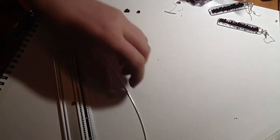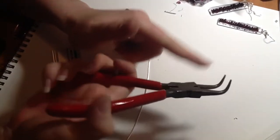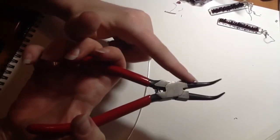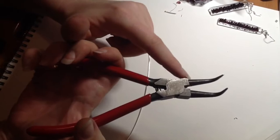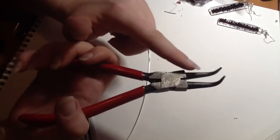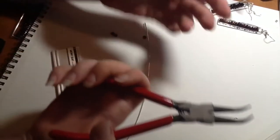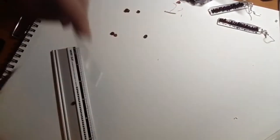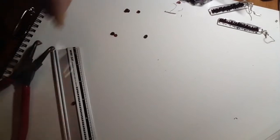Now what we're going to use to make our frame is the flat part of our pliers. Your pliers should have something like that in the middle of them. If not, just use something with a sharp angle to it, something that you can wrap the wire around.